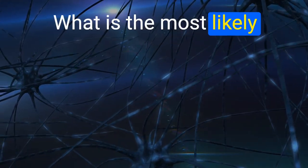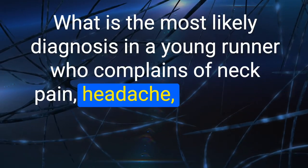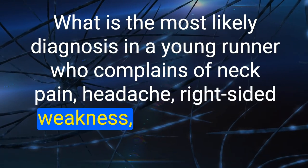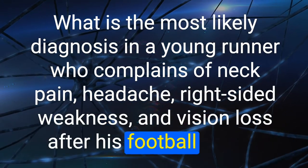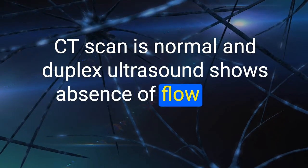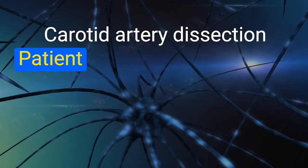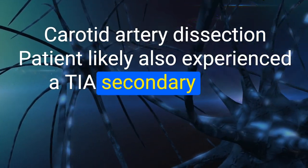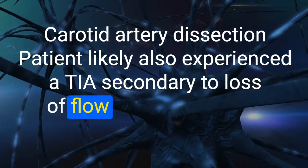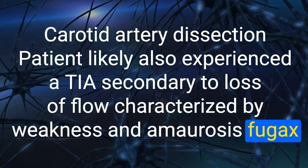196. What is the most likely diagnosis in a young runner with neck pain, headache, right-sided weakness, and vision loss after a football game, with normal CT and absent flow in the internal carotid artery on duplex ultrasound? Carotid artery dissection — the patient likely also experienced a TIA secondary to loss of flow, characterized by weakness and amaurosis fugax.